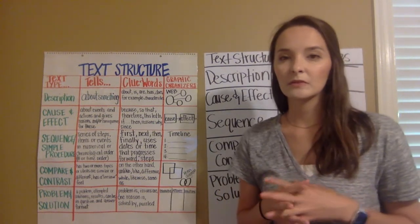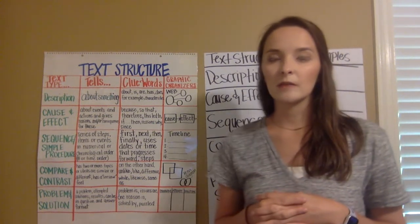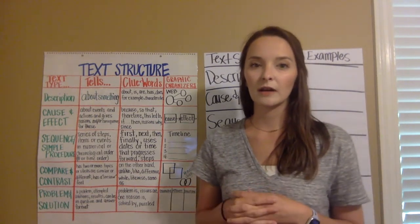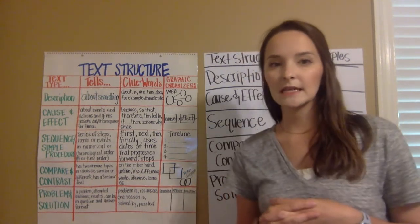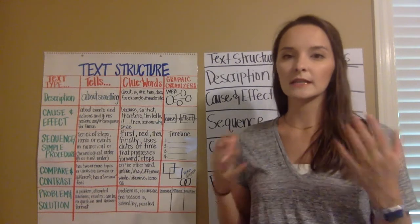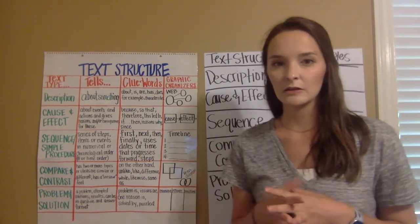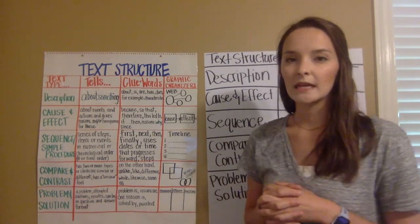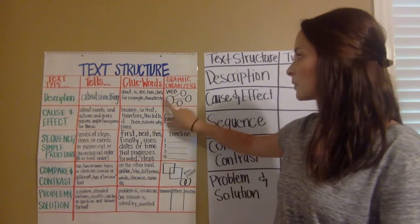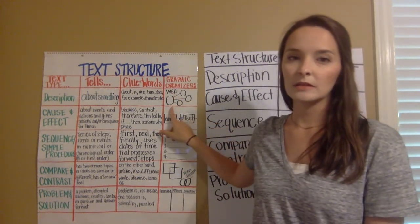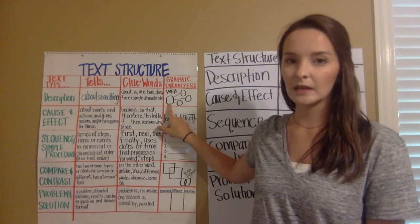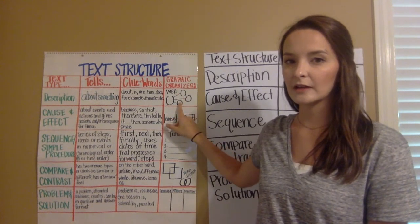Some examples of clue words you might see used in a paragraph are: about, is, has, for example — there are many they could use. A graphic organizer we use is called a web or bubble map, where we put our topic in the center and describe it with details branching out.